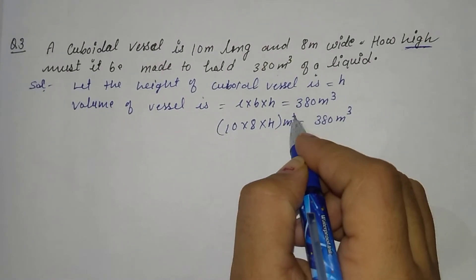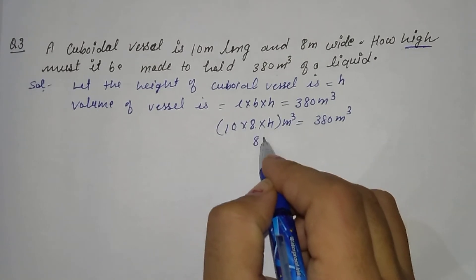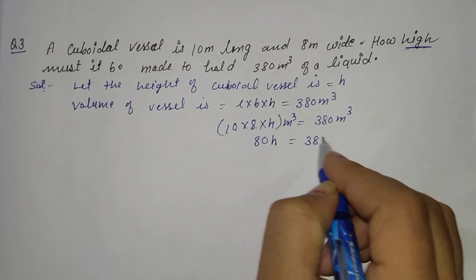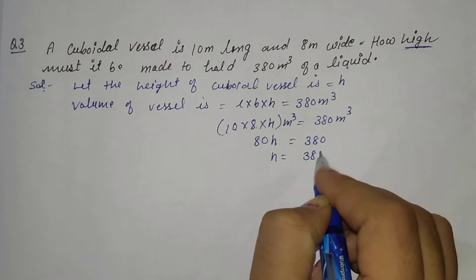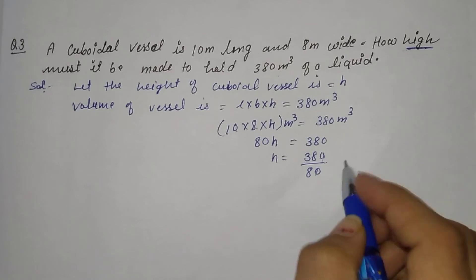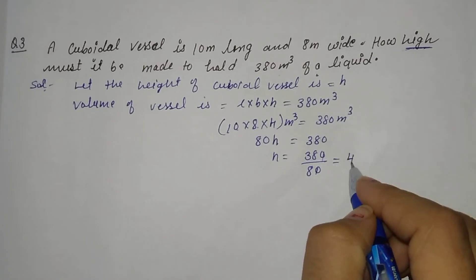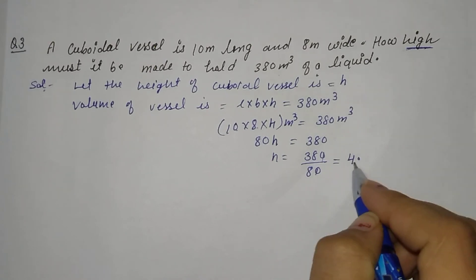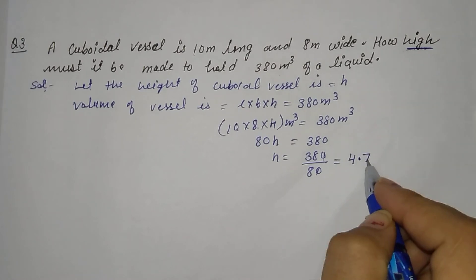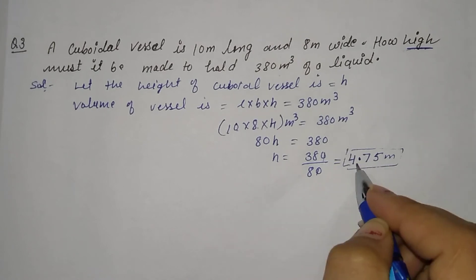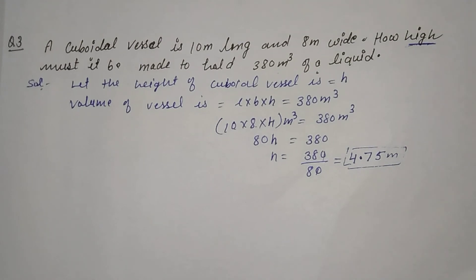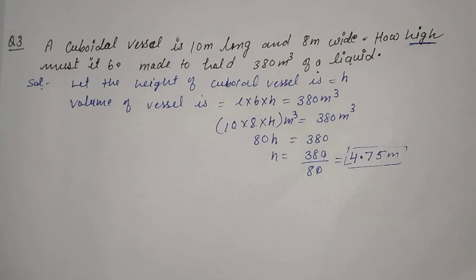From here, h = 380 upon 80. Cancelling the zeros, we get 38 upon 8. Solving this: 4.75 meters. So the height of the vessel is 4.75 meters. This question was easy. All three questions were very basic. We will discuss the next questions in the next video. Thank you. Bye bye.